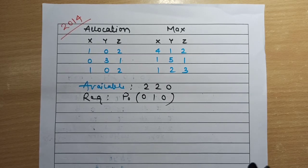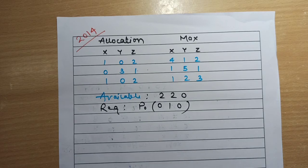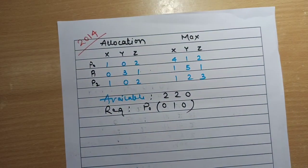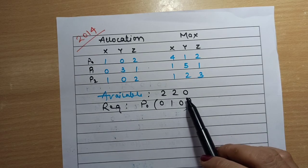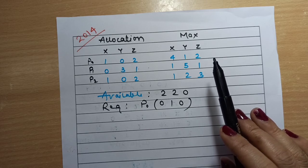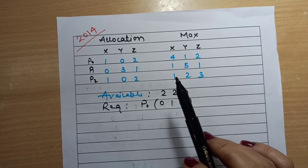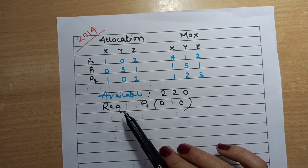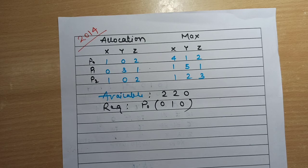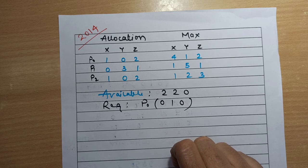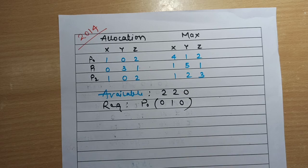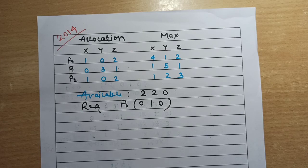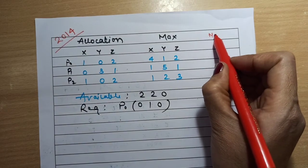Hello everyone, welcome back to my channel. In this problem, the allocation and max have been given for different processes. There are three processes: P0, P1, and P2. The available number of resources are given. We first have to find out whether the system is in a safe state or not, and then check if allocating the request from P0 will keep the system safe.